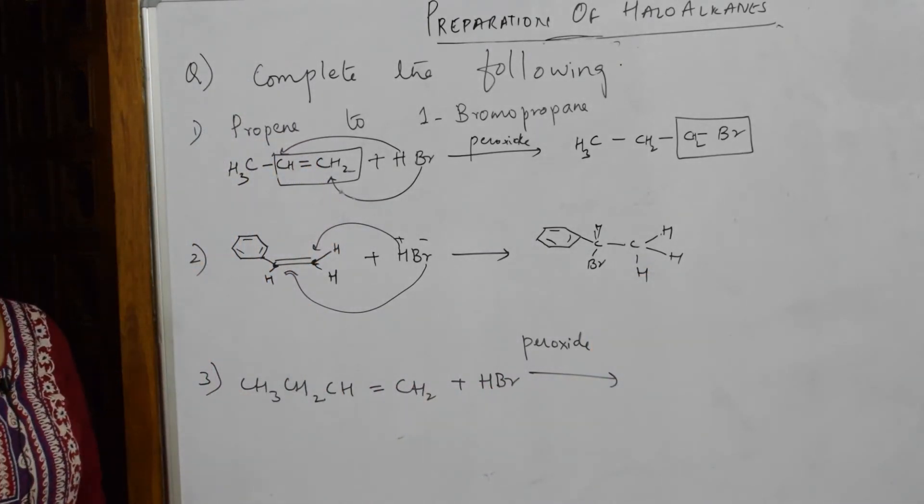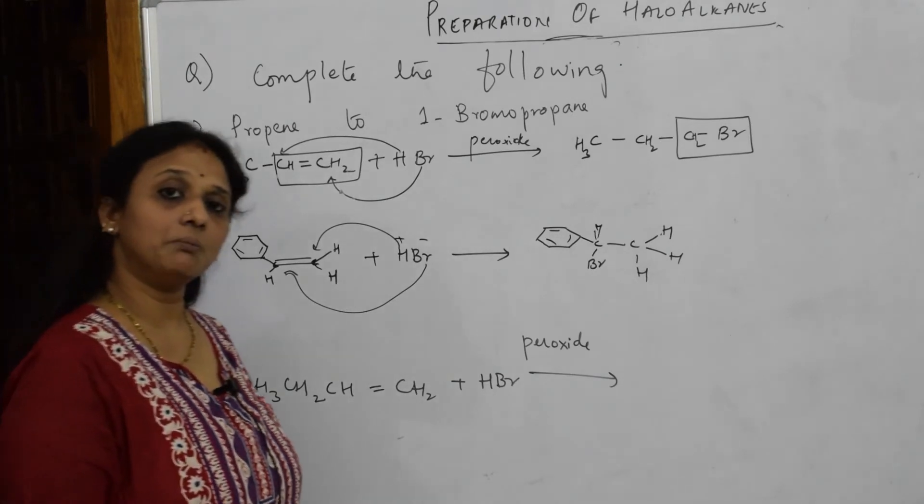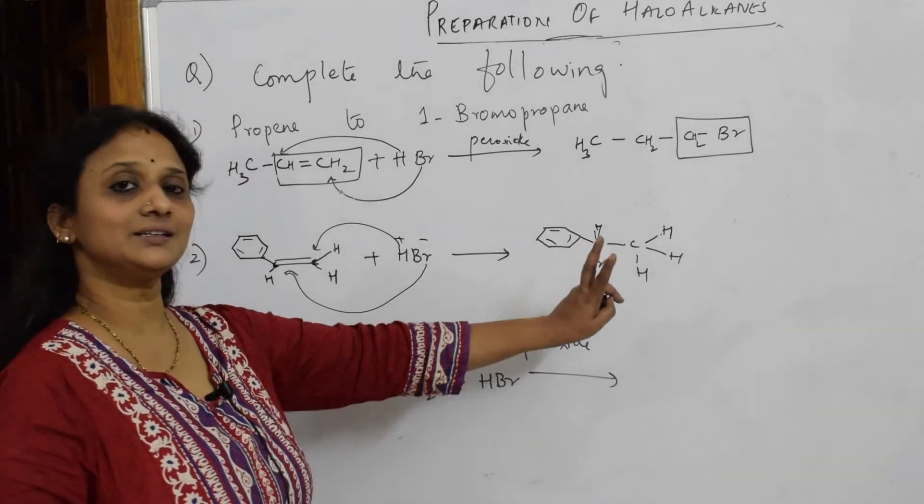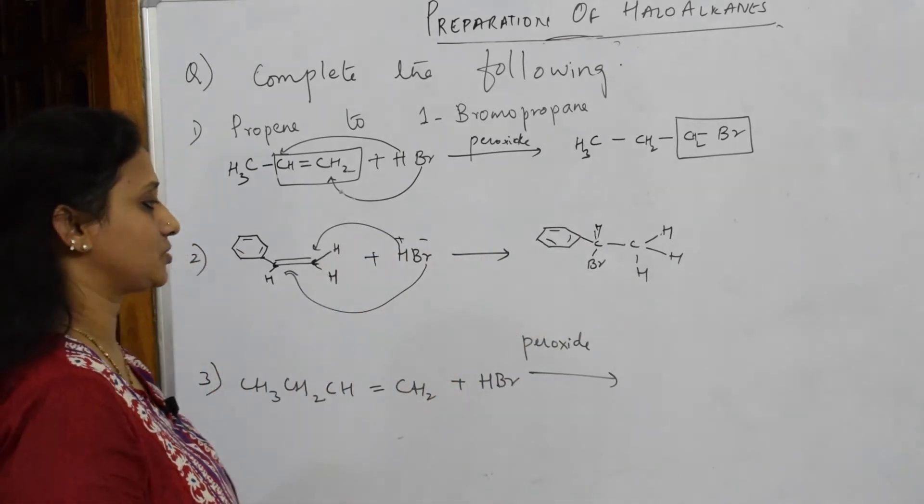The addition around the double bond - it's going to follow Markovnikov addition. That's the reason it has added the negative part to the reverse order.